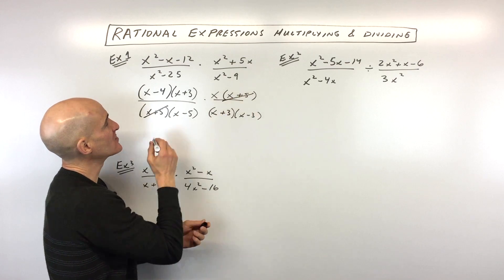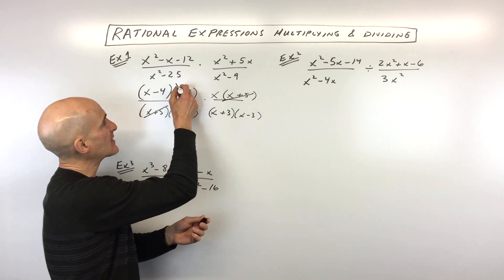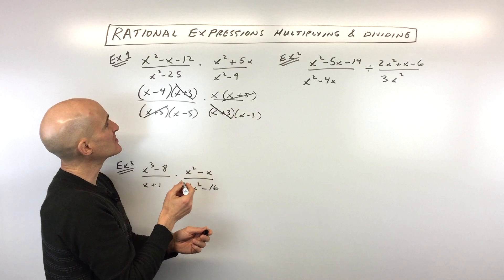So x plus 5 and x plus 5, those are the same, those cancel. We've got x plus 3 and x plus 3, those are the same, those cancel.